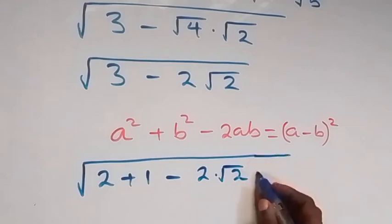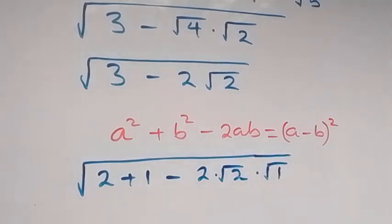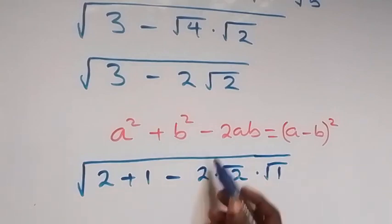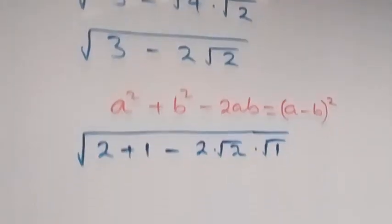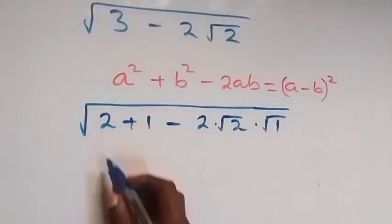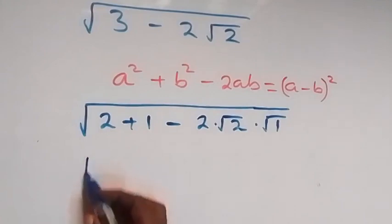Here root 1 is 1, and when 1 multiply this it will still give us same thing as 2 root 2. And then here also we can write 2 as